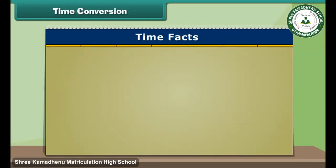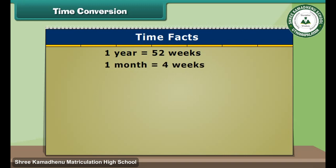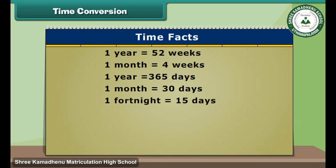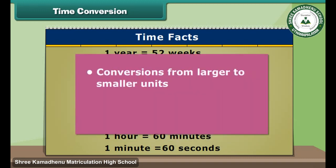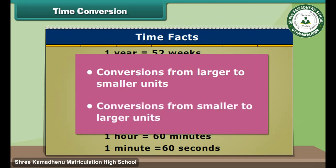Here are some facts about time: 1 year equals 52 weeks; 1 month equals 4 weeks; 1 year equals 365 days; 1 month equals 30 days; 1 fortnight equals 15 days; 1 week equals 7 days; 1 day equals 24 hours; 1 hour equals 60 minutes; 1 minute equals 60 seconds. Let us use these facts to perform conversions from larger to smaller units and from smaller to larger units.